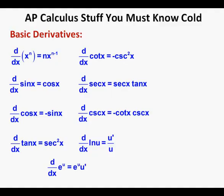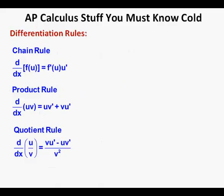The derivative of ln(u), or natural log of u, is u prime over u. The derivative of a to the power of u is a to the power of u times u prime. Now to three major differentiation rules. The chain rule: the derivative of f(u), where u is a function inside a function (a composition of functions), is f prime of u times u prime. The product rule: the derivative of the product of u and v is u times the derivative of v plus v times the derivative of u. The quotient rule: the derivative of the quotient of u and v is v times u prime minus u times v prime, all over v squared.